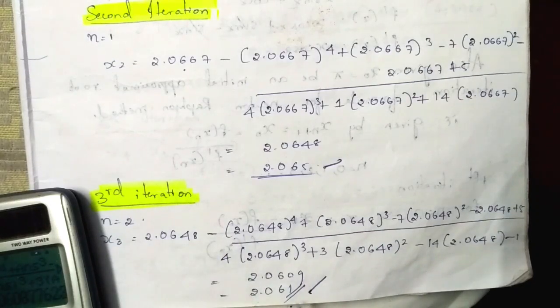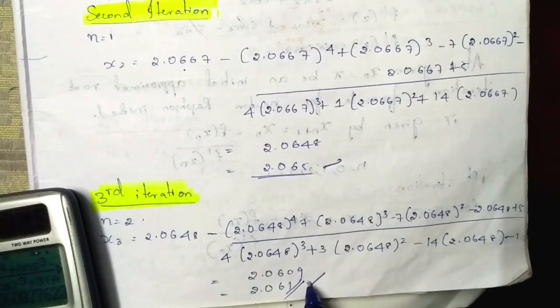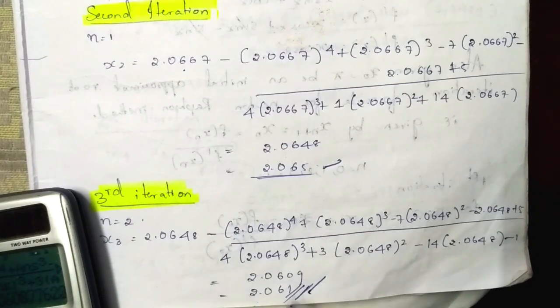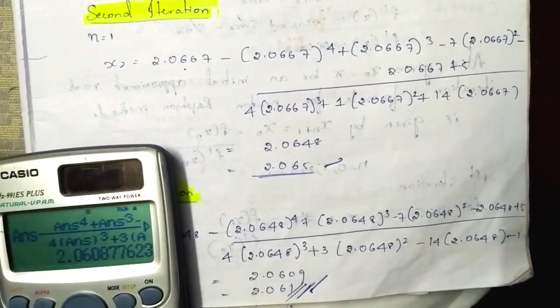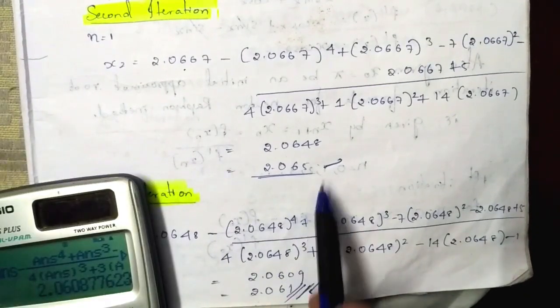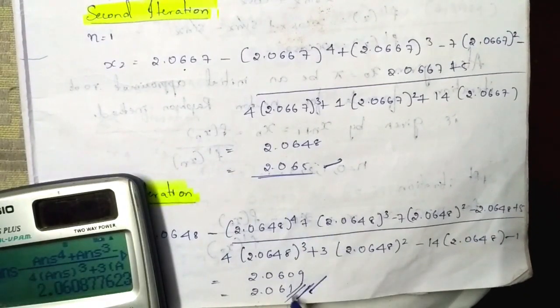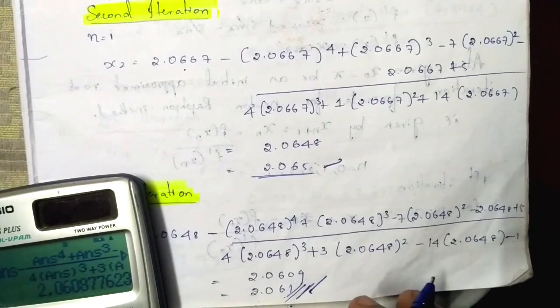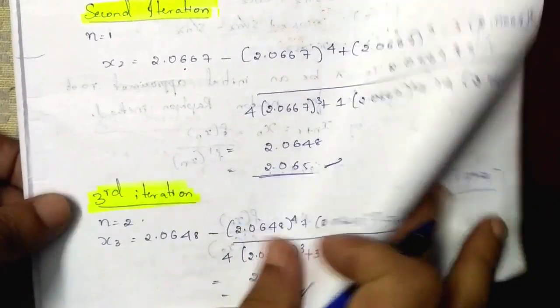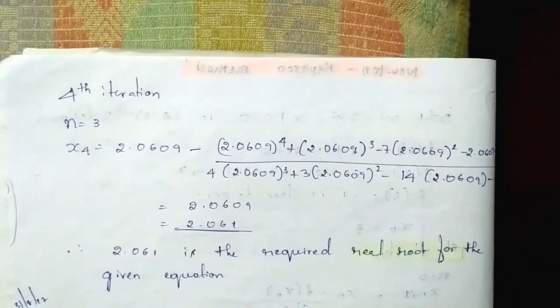We have to keep checking iterations until we get the same value. If both consecutive values are the same, we stop the iteration. We check whether consecutive values differ — if they are different, we continue.